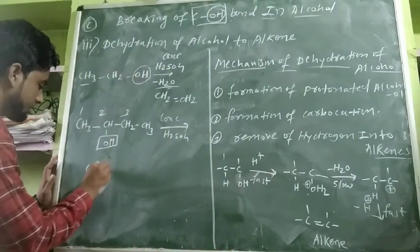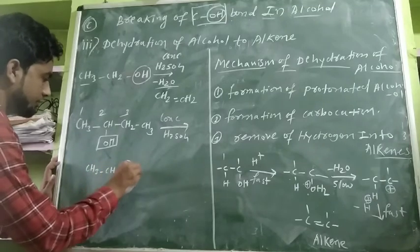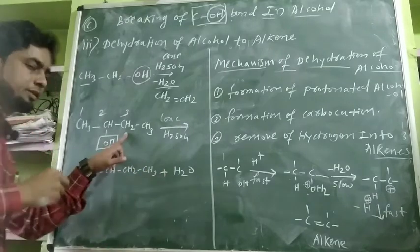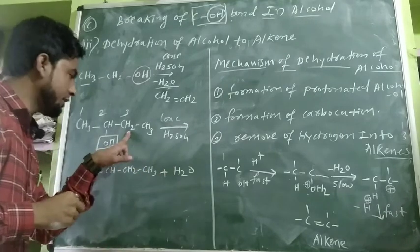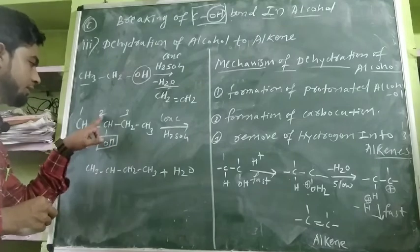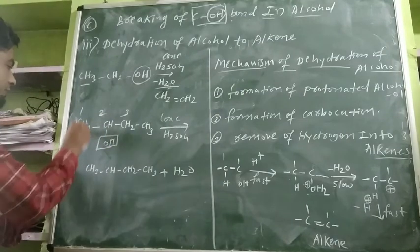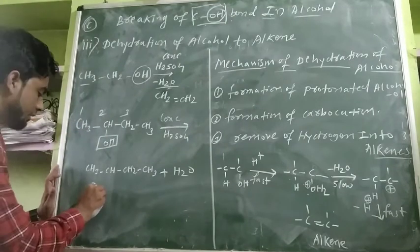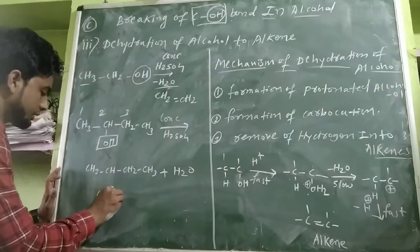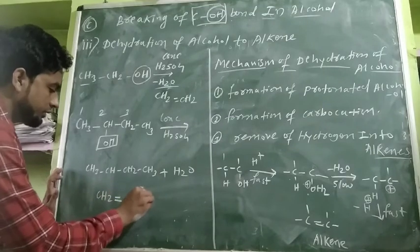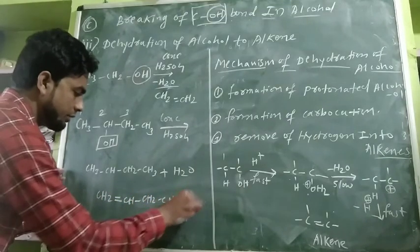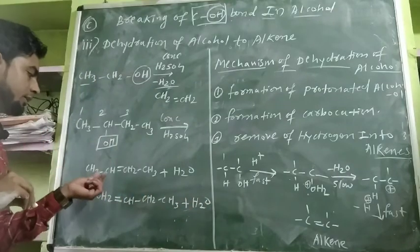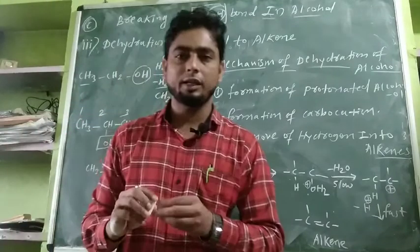So we get two products. First product: we lose one H from carbon number three and OH from carbon number two, giving us CH2=CH-CH2-CH3 plus loss of water molecule. Second product: we lose one H from carbon number one and OH from carbon number two, giving us CH3-CH=CH-CH3 plus loss of water molecule.